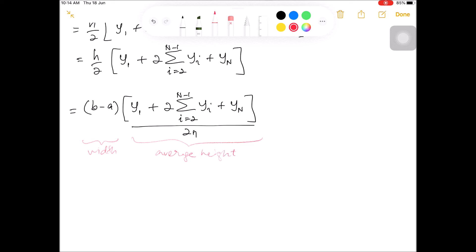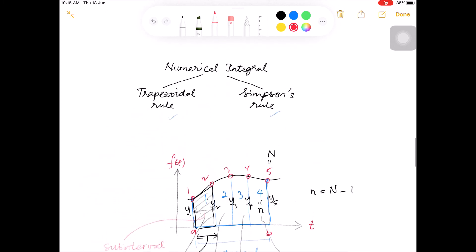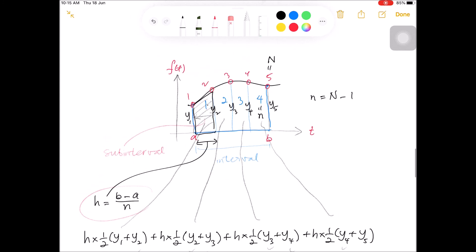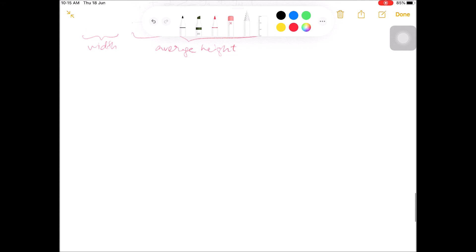So here we wish to use this trapezoidal rule formula to compute the average value, RMS value, and the normalized power. So I copy these equations and put them down here.